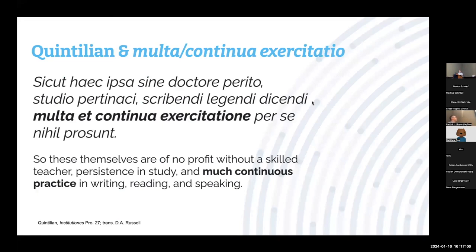In the beginning of Quintilian's Institutiones, his guide to rhetorical training, at the very end of the prologue, Quintilian writes that it's not enough for a student to have natural talent in developing the skills of the speaker, but that it arises from having a skilled teacher, persistence in study, and multa et continua exercitatione — much continuous practice, to use Russell's translation. As a computational philologist, I'll conveniently translate this to systematic training on a lot of data. You just need a lot of practice.